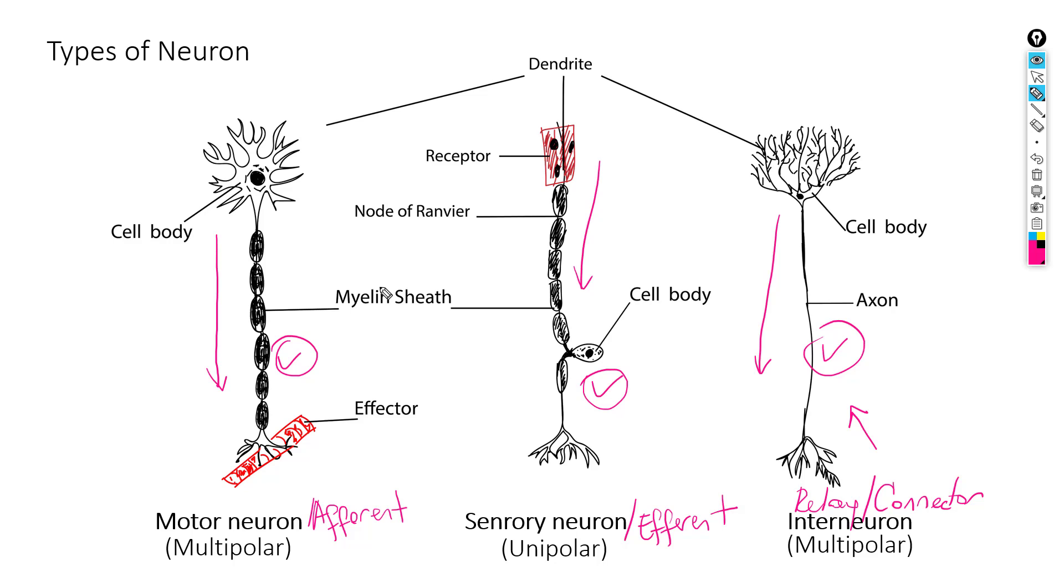Now, as these nerve cells differ from each other regarding the functions they do, they also differ in terms of the structure they have. As you see here, if there are many outgrowths projected from the cell body, this is gonna be a multipolar neuron.